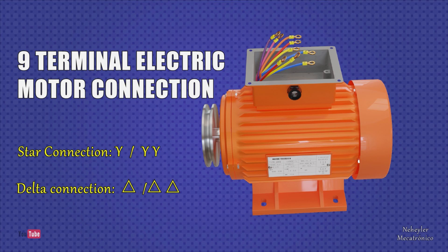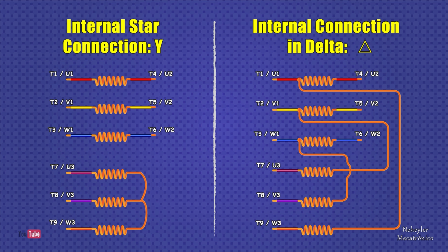To do this, you can make star connections or delta connections. These electric motors, in general, are divided into six coils inside, from which nine terminals emerge to the outside.